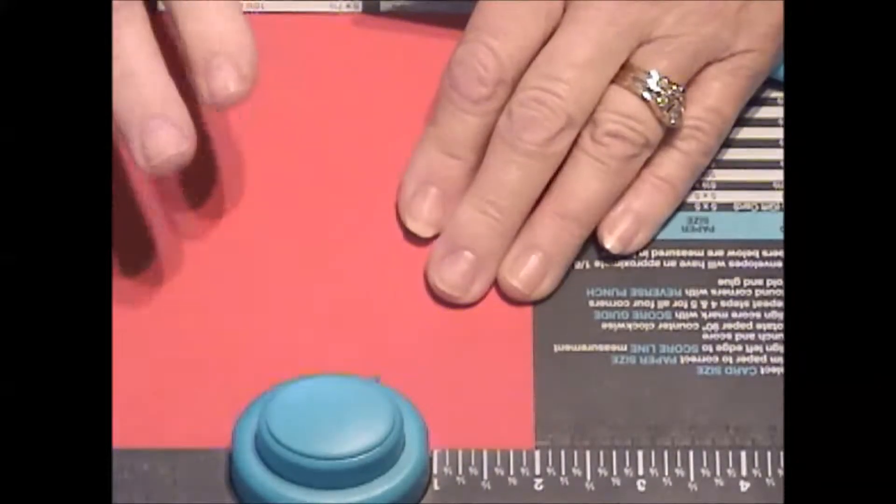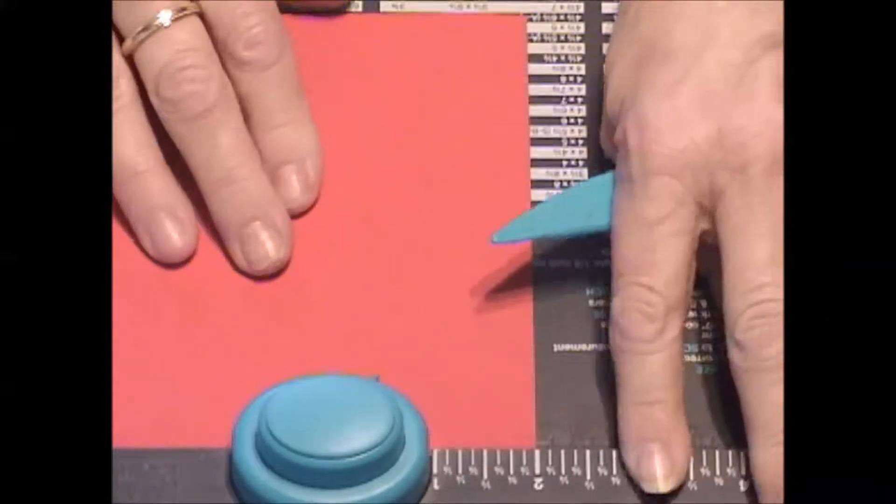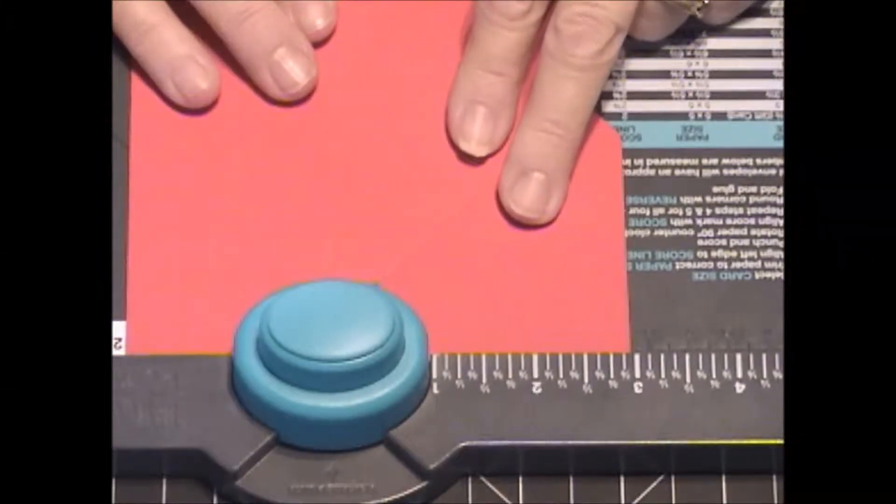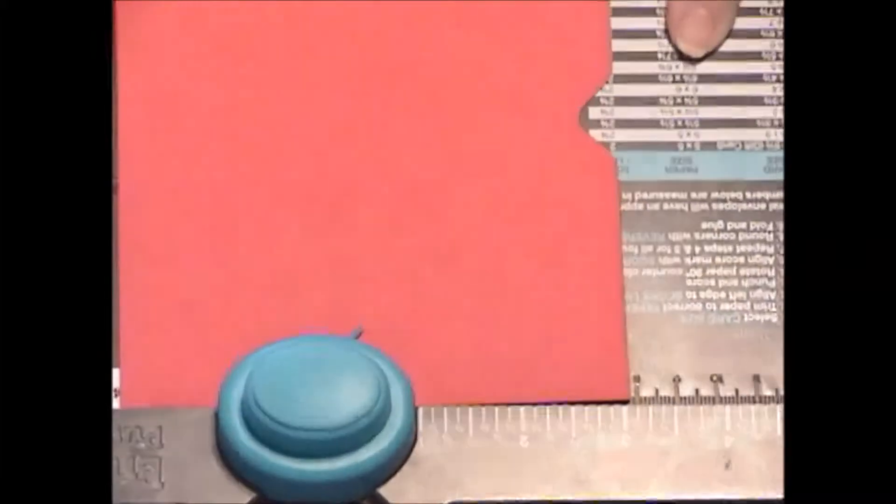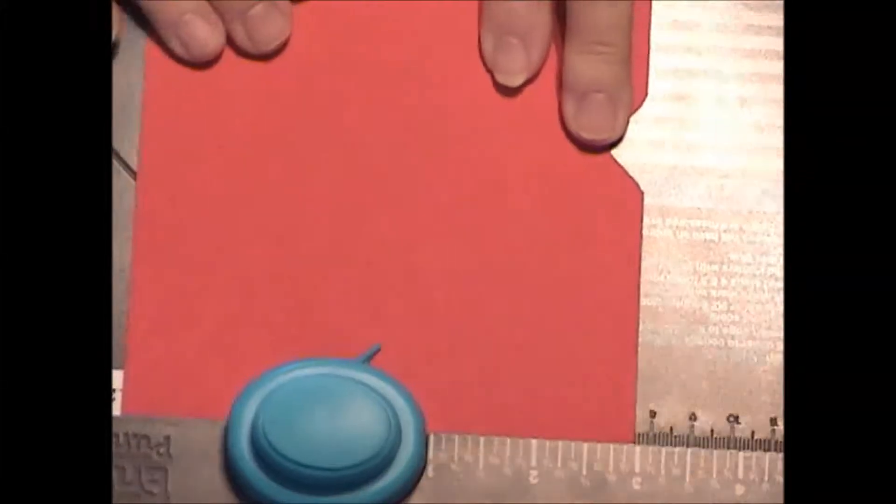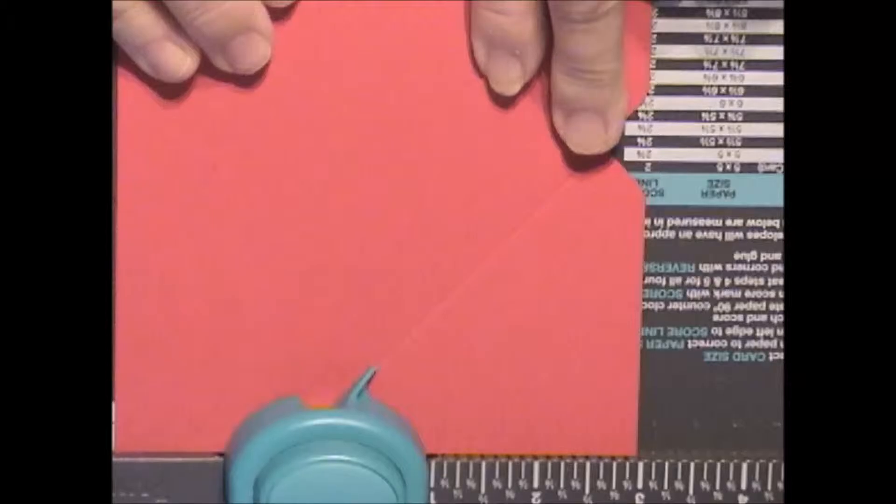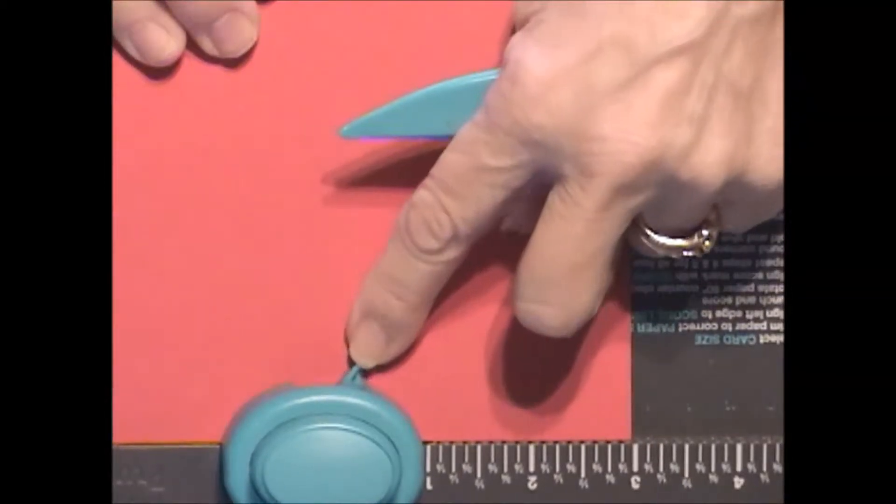Now we don't look at the measurements anymore. Now we're going to line it up at the score mark, see right there, with this little arrow.